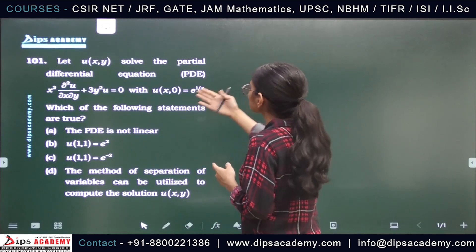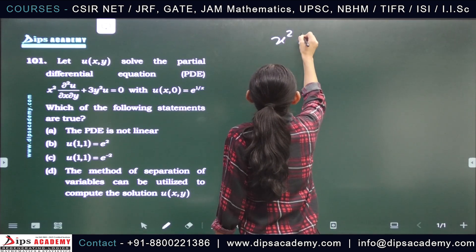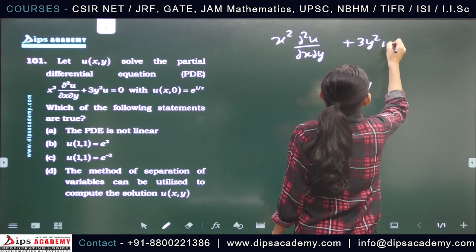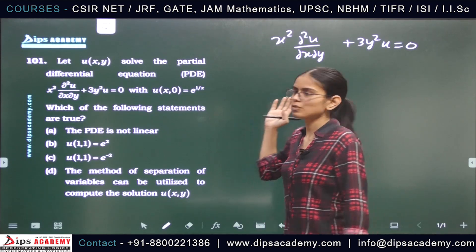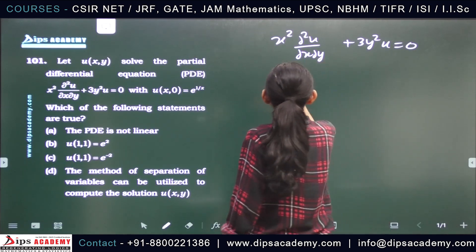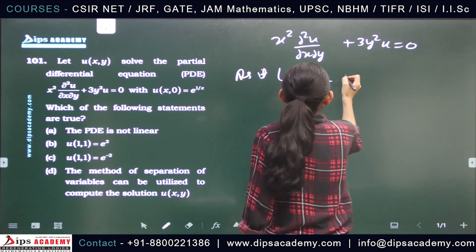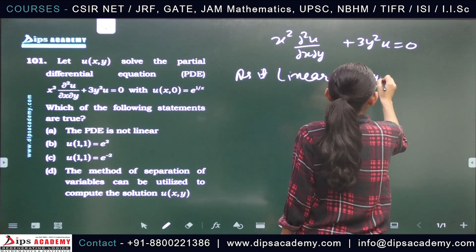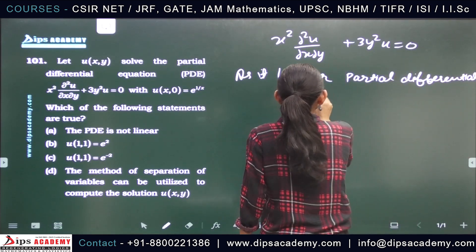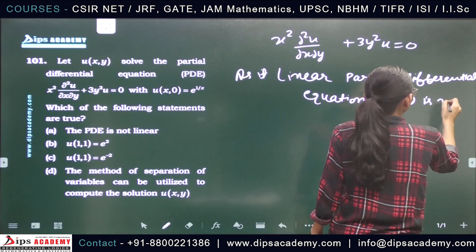So let's start the question. As you can see, this differential equation — x squared del squared u by del x del y plus 3y squared u equals to 0 — is a linear partial differential equation, because there is no product between dependent variables. So option A is wrong, it is not correct.